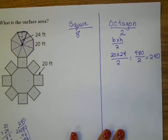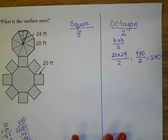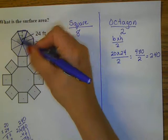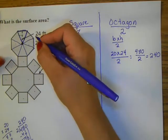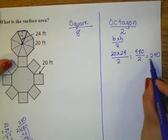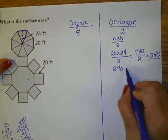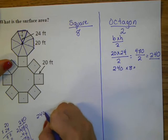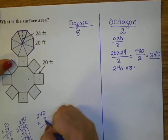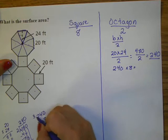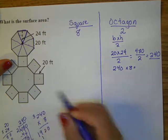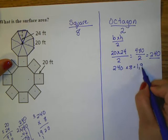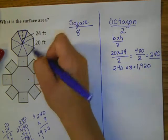So I can do a little helper problem. If I do that, I know that I get 240. 240 is just the area of one triangle. There are eight that make up one octagon, so now I'm going to take 240 times eight.